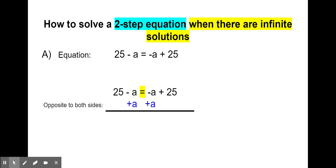On the left, negative a plus a gives us zero — those cancel out, so we'll be left with 25 on the left. Bring down our equal sign, and on the right side we still have negative a plus a, which cancels out to zero. So we'll have 25 brought down on the right. Our new statement is 25 equals 25.